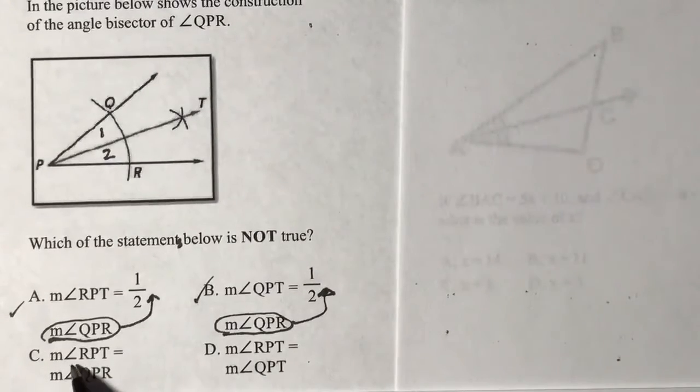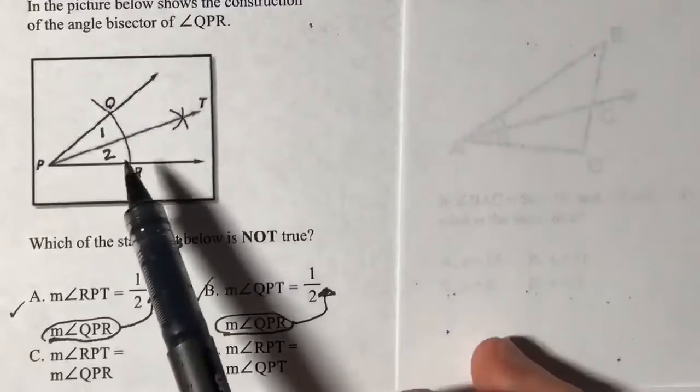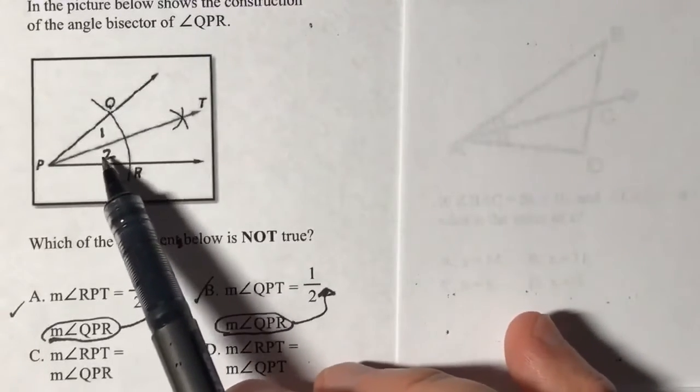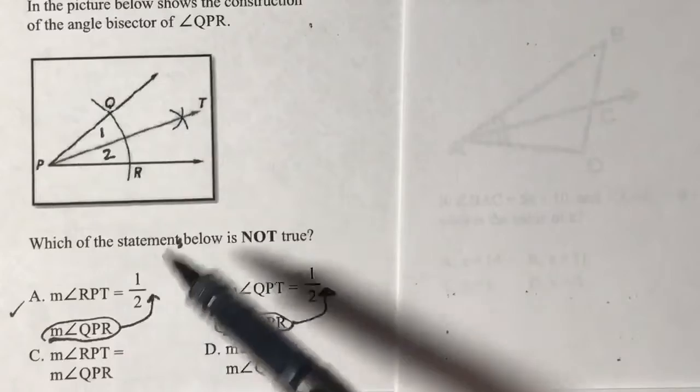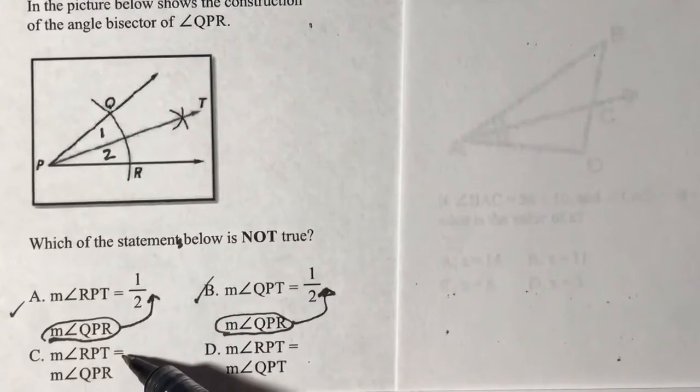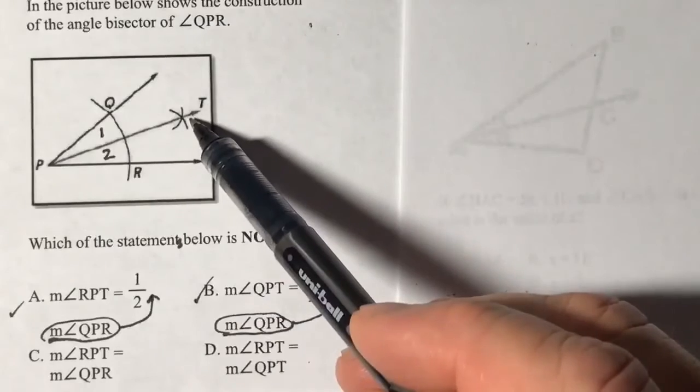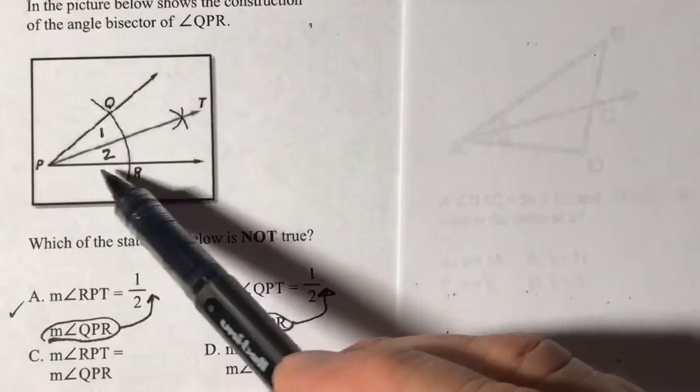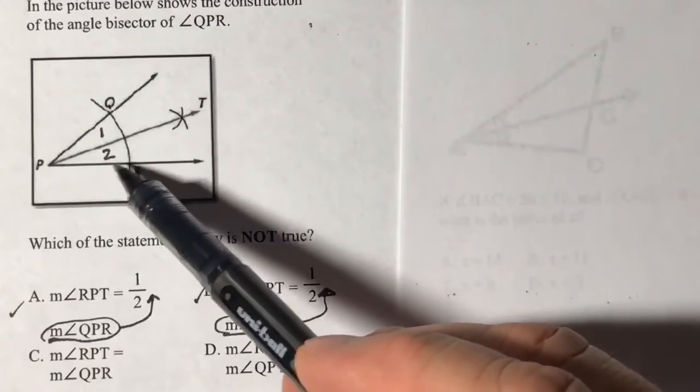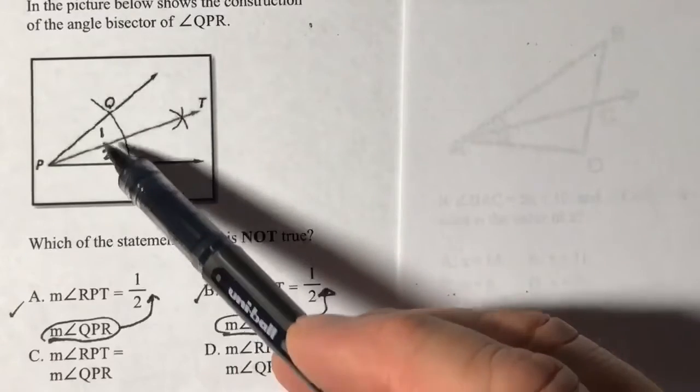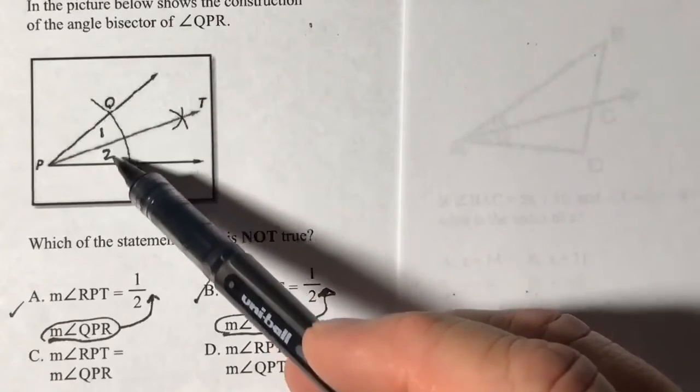Let's take a look at the next one. Measure of angle RPT. Let's look at RPT. That's this angle we numbered as 2. And it says it's equal to QPR. Nope, those can't equal. QPR is both of those added up.